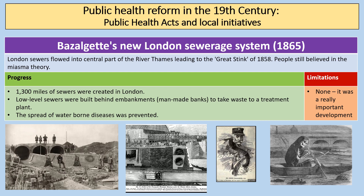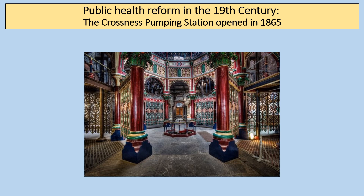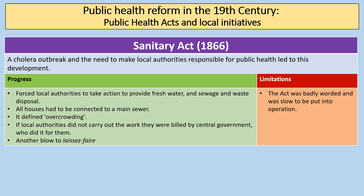The Crossness Pumping Station, which opened in 1865, is a great example of the Victorian approach to major infrastructure — the beauty of the building shows how seriously the Victorians took their big infrastructure projects.